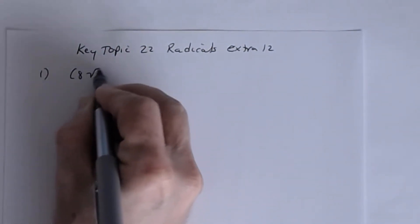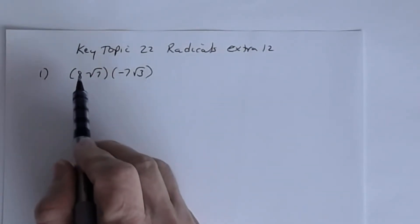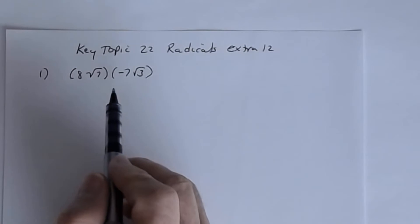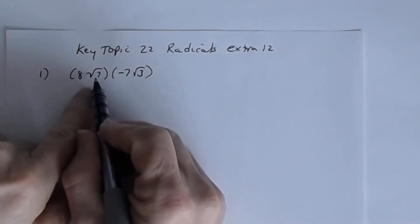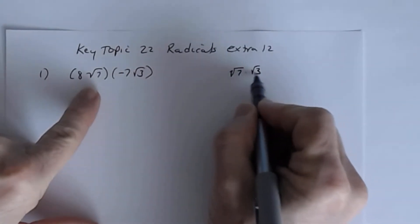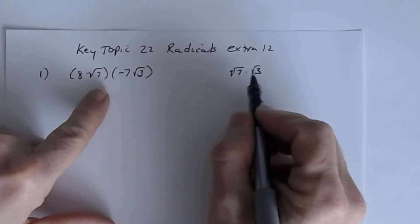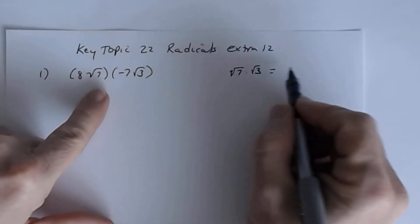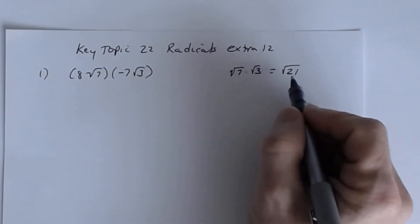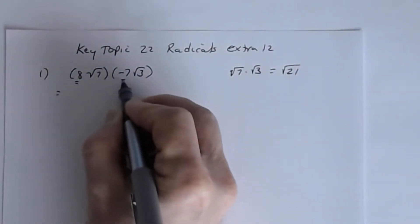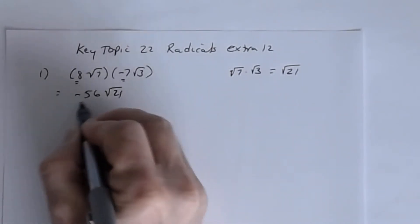Number one: you have 8√7 times negative 7√3. Notice everything is a product — 8 times √7 times negative 7 times √3. Using the product property for radicals, when the indices are the same (both 2s here), you can multiply the radicals together. √7 times √3 gives √21, and the only perfect square that goes into 21 is 1, so it cannot be simplified. Then 8 times negative 7 is negative 56, giving the answer: -56√21.